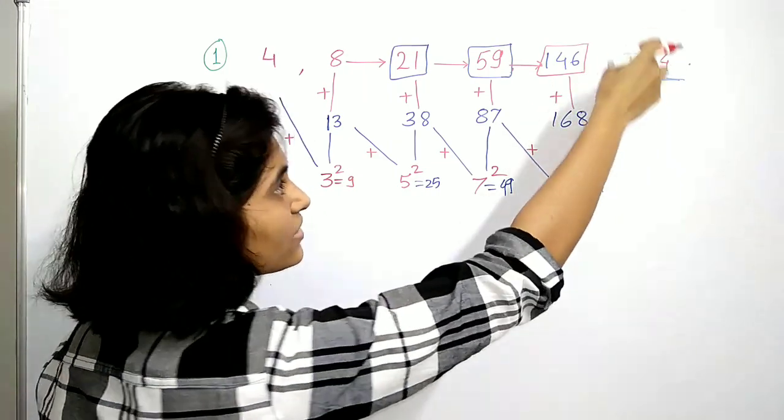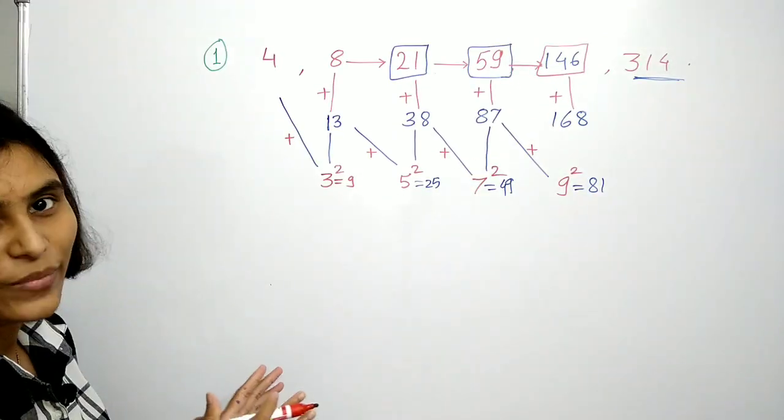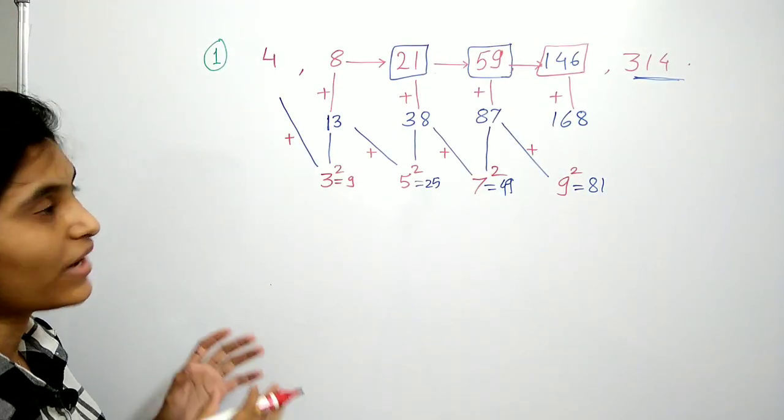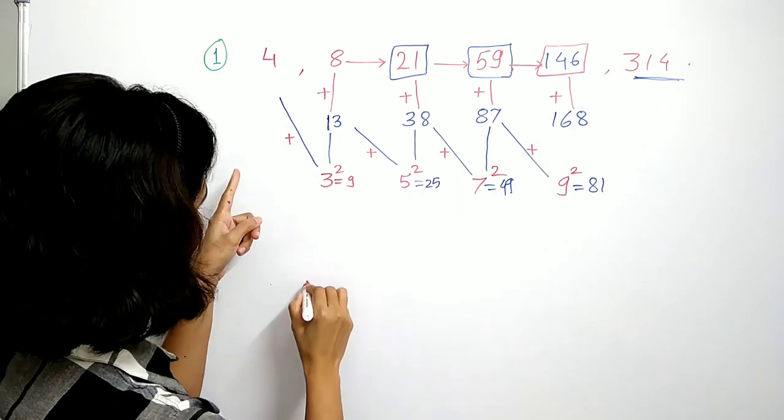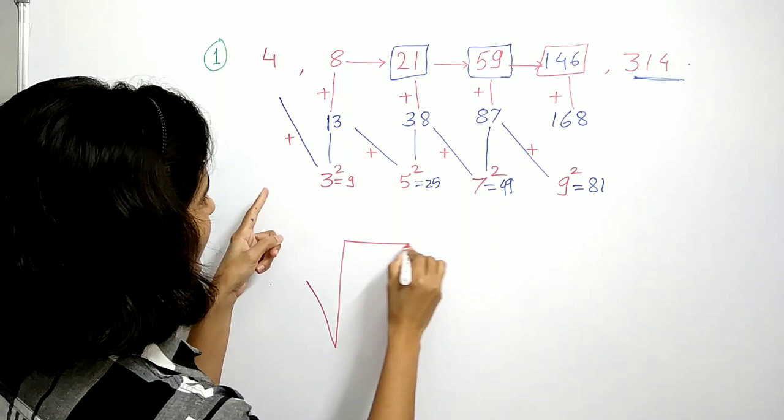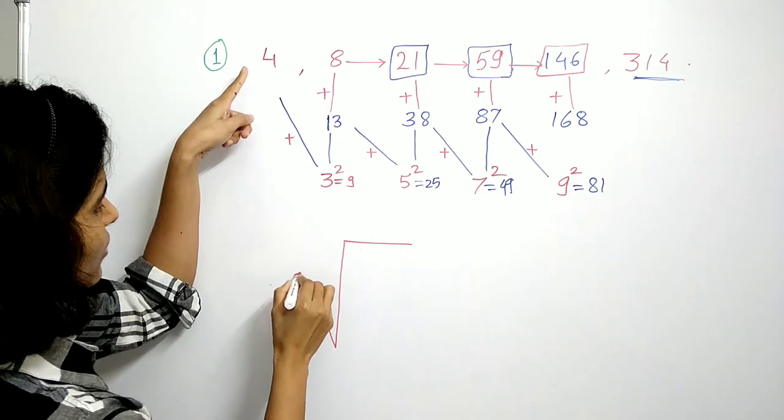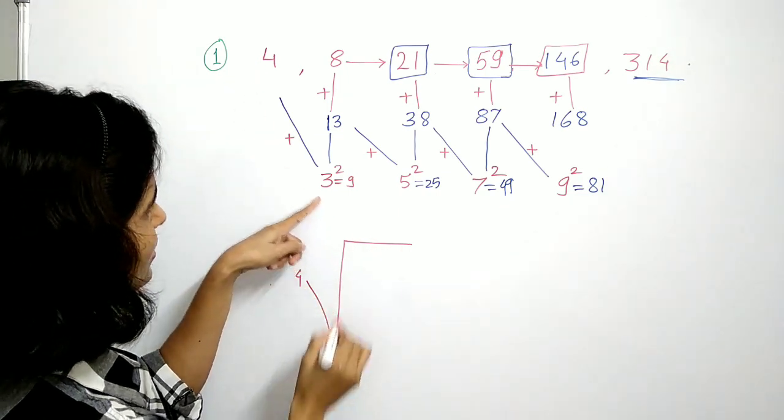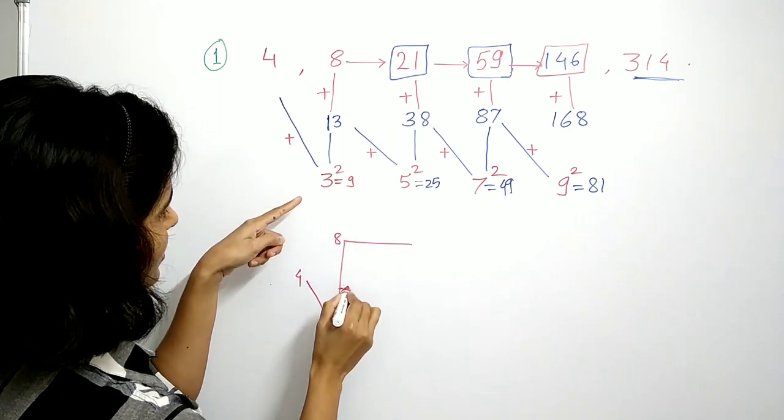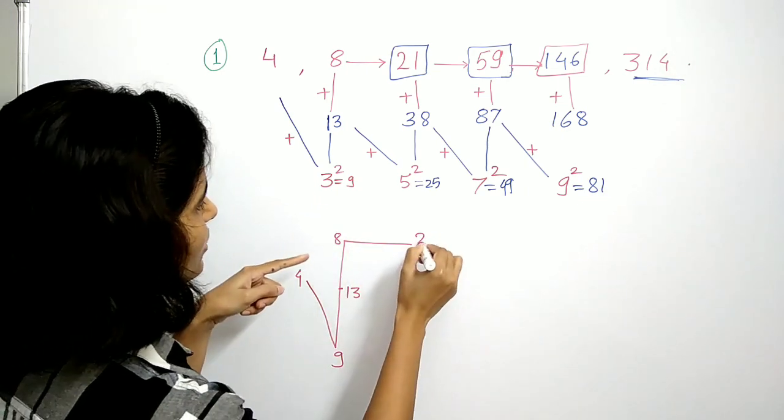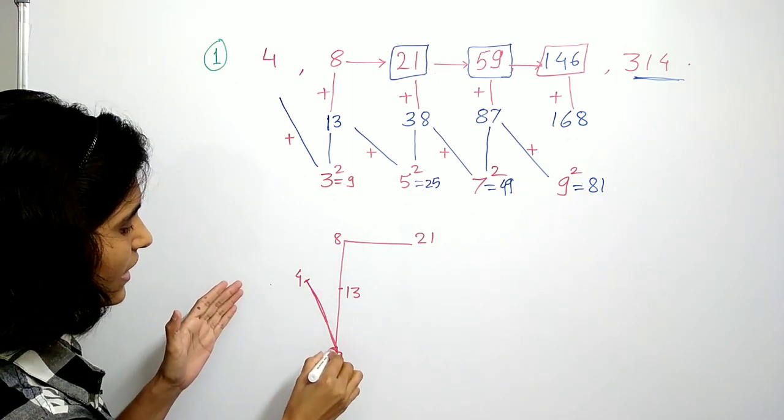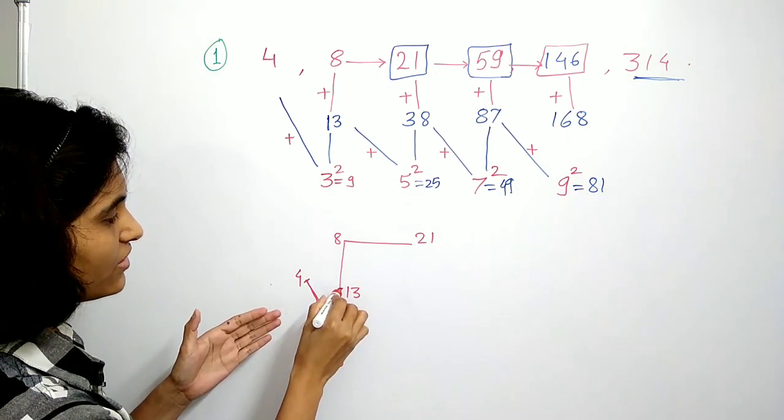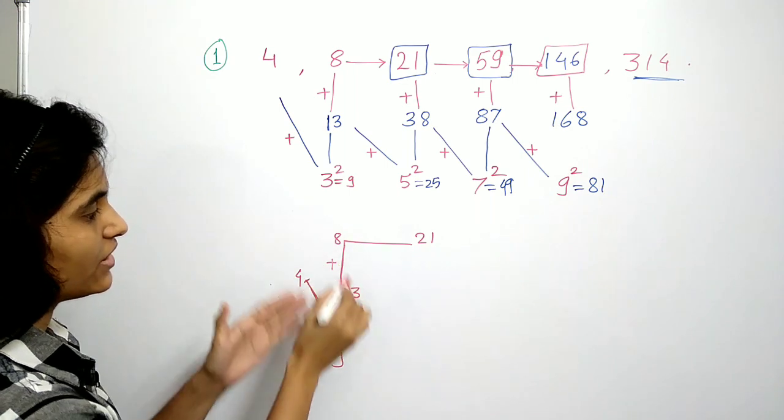So here is a pattern. You can remember this by using a square root sign here. So this is our 4, this is 9, then here it is 13, 8, and 21. This is our first iteration. That means you are adding this 4 and 9, we get 13. Now add this 13 and 8, we will get this 21.